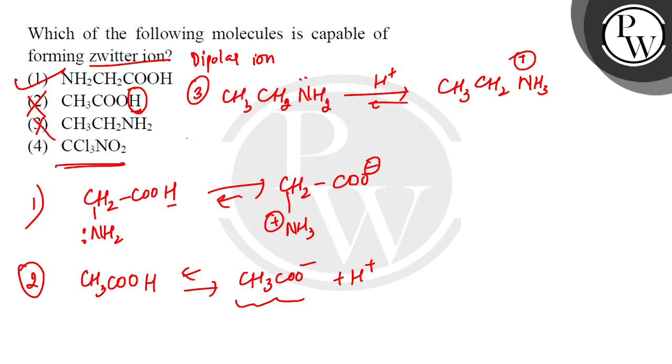CCL3NO2 has three chlorines attached to carbon and an NO2 group. The nitrogen has a positive charge and oxygen has a negative charge, but this is not a zwitterion form. The positive and negative charges exist due to electron sharing within the NO2 group. This is not a zwitterion because there's no proton transfer within the same molecule, so the fourth option is also wrong.